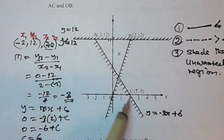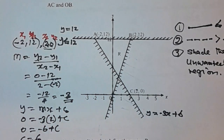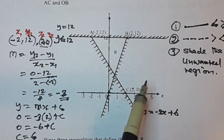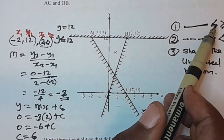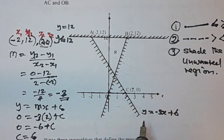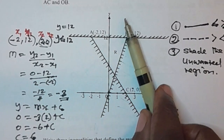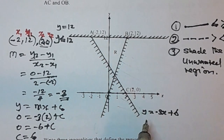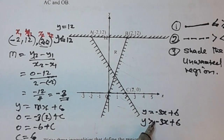Now, what is the inequality for this line? The line is full, so our inequality will have either less than or equal to, or greater than or equal to. Which side is the unwanted region? The shaded part is the less part, meaning the greater part is the wanted part. So the inequality is y greater than or equal to negative 3x plus 6.